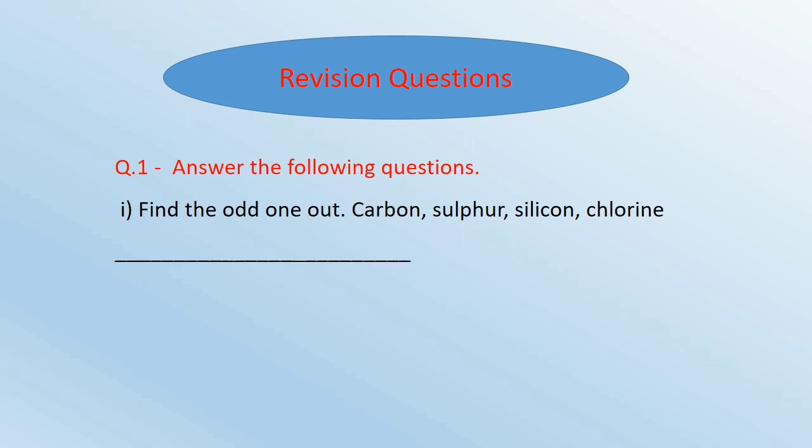Let's revise with some revision questions. Question number 1: Answer the following questions. First is find the odd one out: Carbon, Sulphur, Silicon, Chlorine. And the answer is Silicon, as Silicon is a metalloid and Carbon, Sulphur and Chlorine are non-metals.